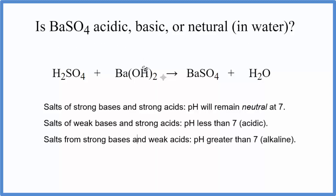To figure that out, we need to know the neutralization reaction that produced the barium sulfate. Here we have sulfuric acid, H2SO4, plus barium hydroxide, Ba(OH)2. They come together in a neutralization reaction that makes the barium sulfate and water.